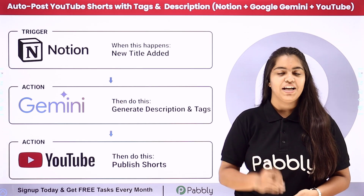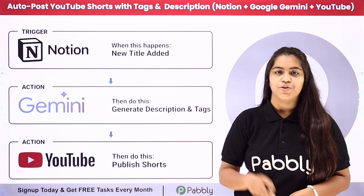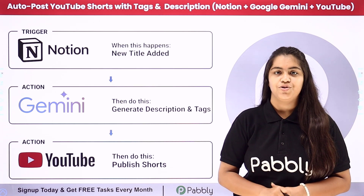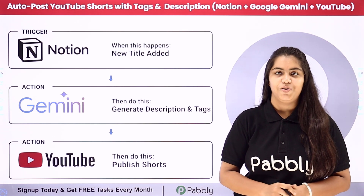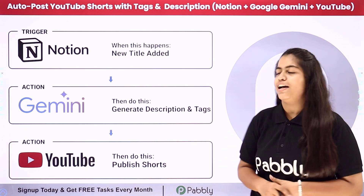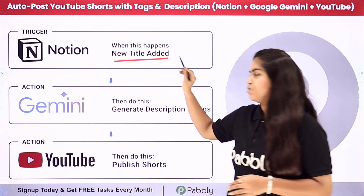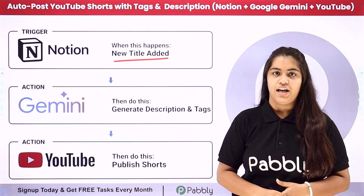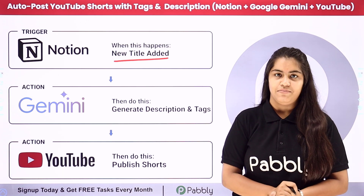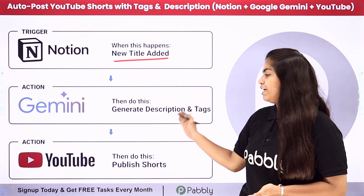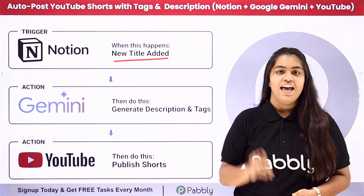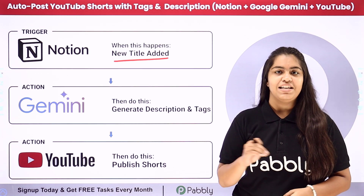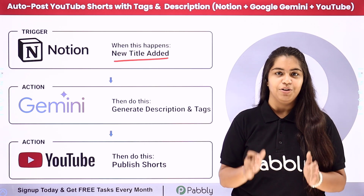I am running an EduTech company and we post YouTube Shorts regularly on our channel to engage our audience. We use Notion to plan and organize our video content. What I want is that as soon as I add the video title and the file URL in the Notion database, automatically Google Gemini should generate the video description and the tags, and with those details, the video should be posted on my YouTube channel.